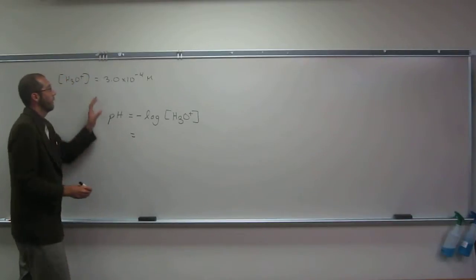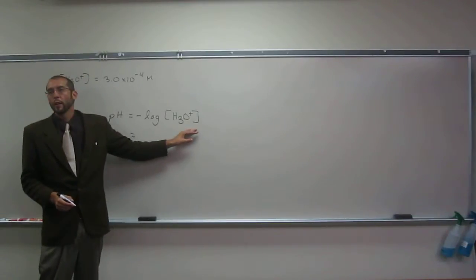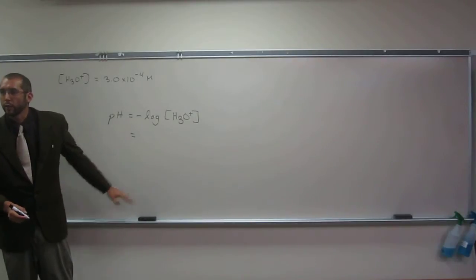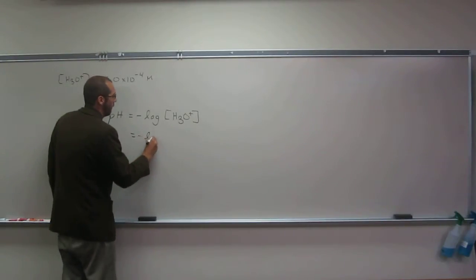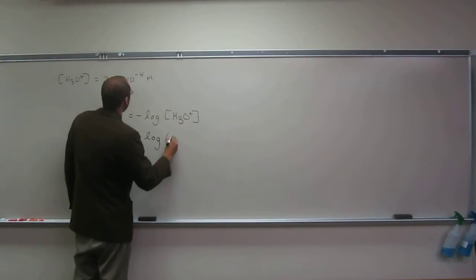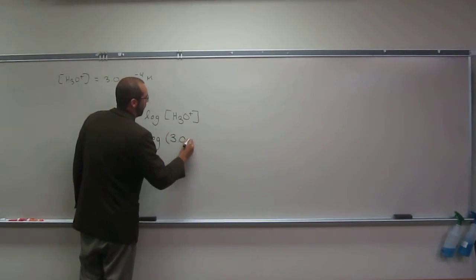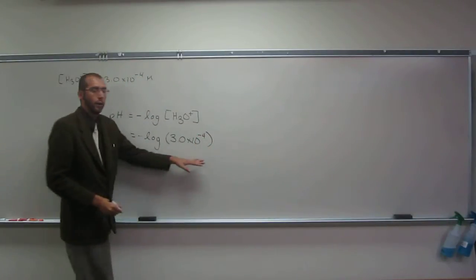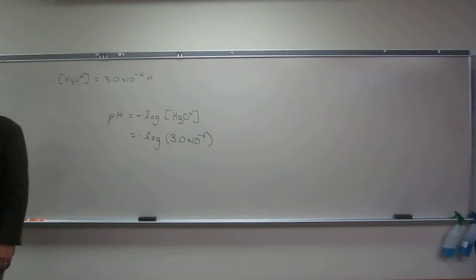And all you have to do—and again, the units don't come out, pH is unitless, so watch out about that. So negative log, and I'll just put in here 3.0 times 10 to the negative 4, no units, just so I won't confuse myself.